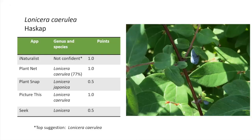Extension offices get loads of questions asking for plant ID of shrubs with berries because people want to know: can I make jam with this, or is it poisonous? I have photos of three different berry plants. Here I'm using hazcap, which is Lonicera caerulea. Three of the apps identified it to species. PlantSnap said Lonicera japonica, and Seek only had the genus.